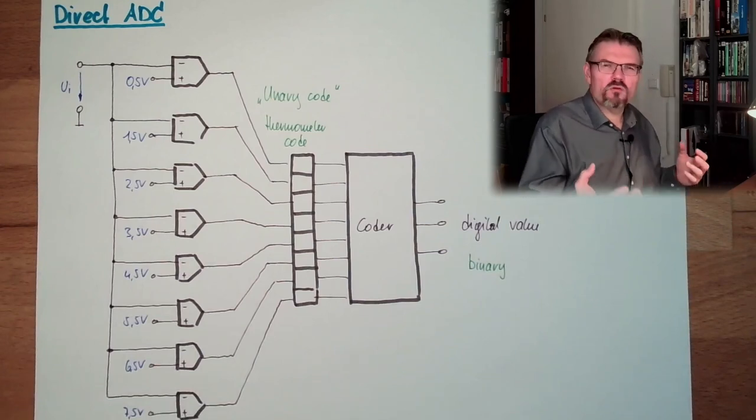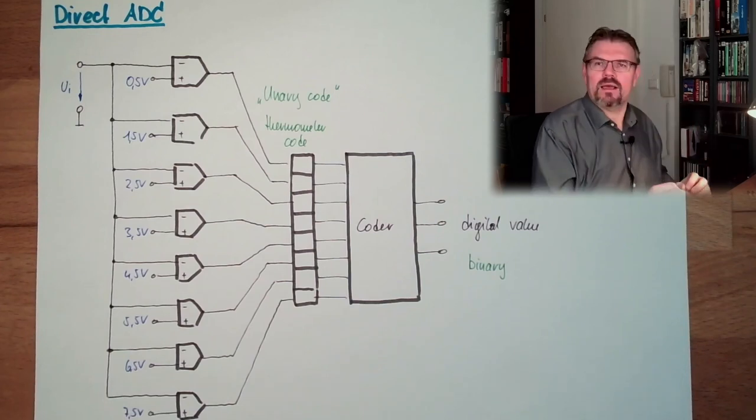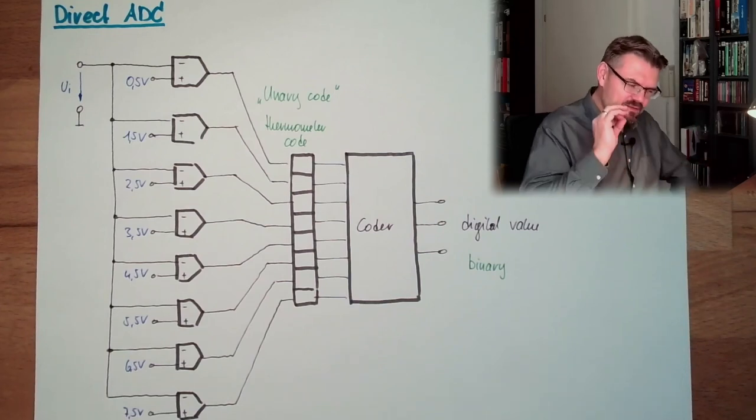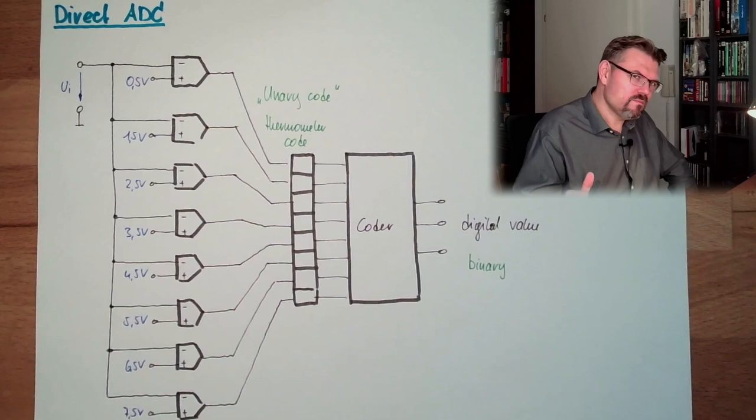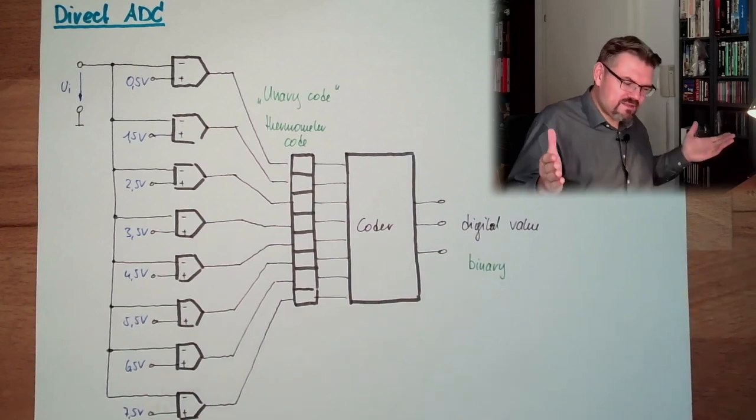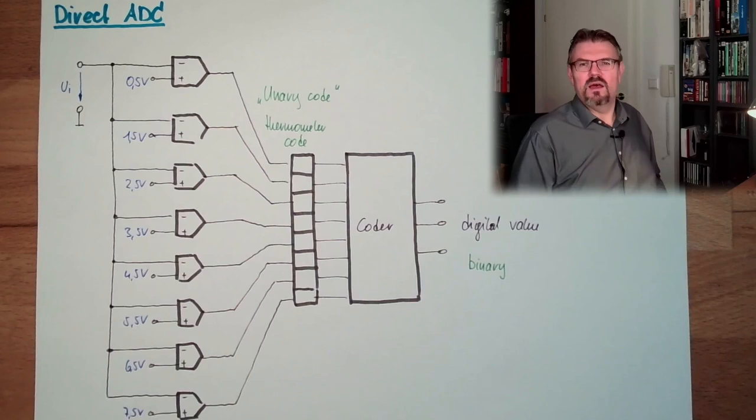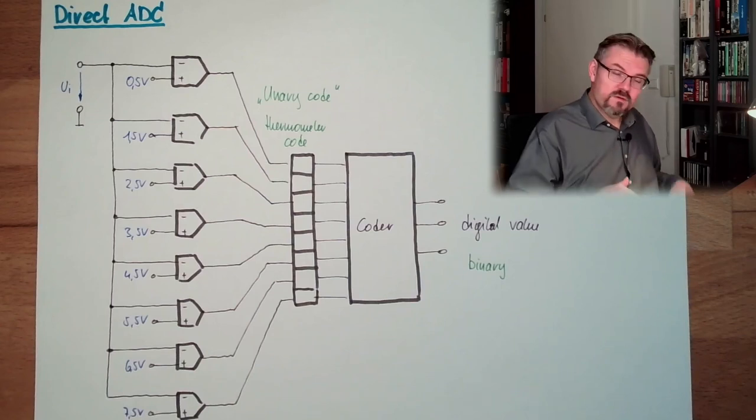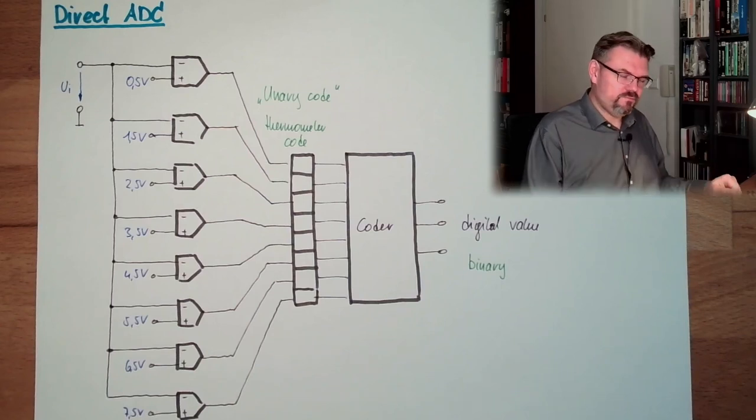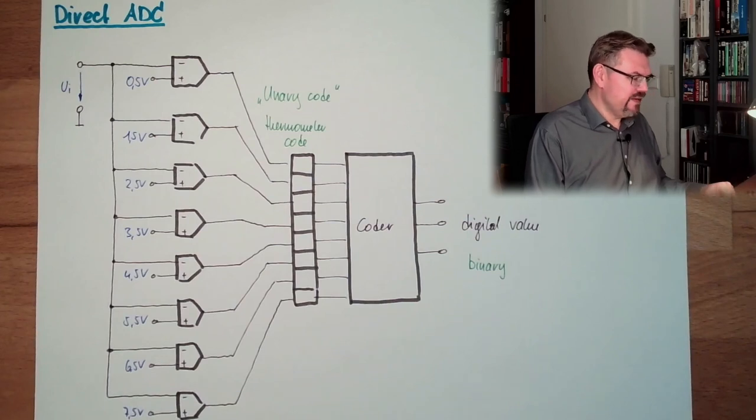There's no counter needing to approximate. There is nothing. Fast. If it really needs to be fast, direct ADC. A lot of effort. Very expensive. Fast, fast, fast. ADC.